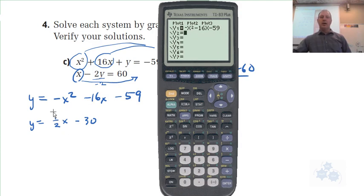The next one, let's type in this. Now you can do 1 over 2, or you can do 0.5. Right? 0.5x minus 30.